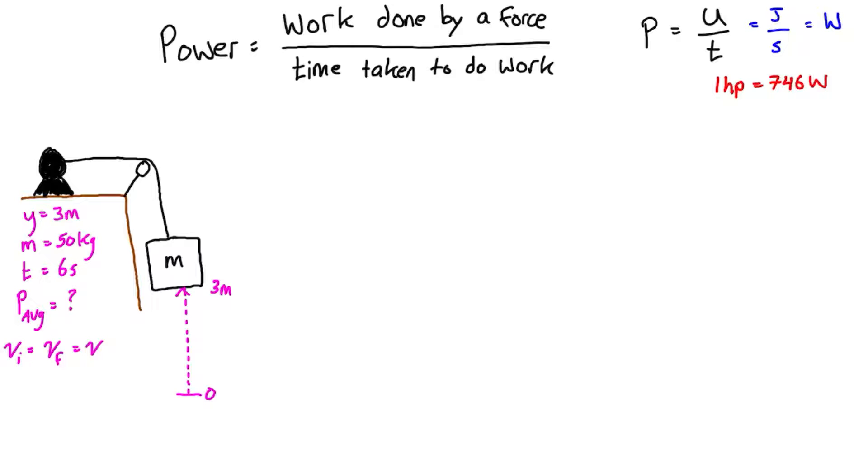We'll start with the conservation of mechanical energy equation, which is T1 plus V1 plus sum of work from one to two is equal to T2 plus V2. The capital T's are mechanical energy, the capital V's are potential energy, and U is the sum of work done between state one and state two.